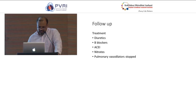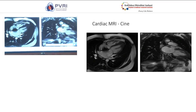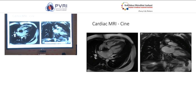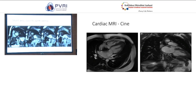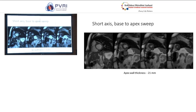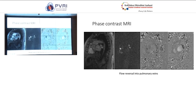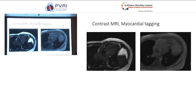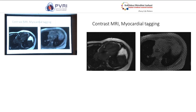We went for cardiac MRI. The cine MRI showed increased myocardial wall thickness at the apex compared to the base, with hypercontractility of the apex showing a spade-like deformity — typical of apical HCM. From base to apex, as we go towards the apex, it is obliterated with increased myocardial muscle thickness coming to around 21 mm by MRI measurement. Phase contrast MRI showed reversal of flow from the left atrium to the pulmonary veins due to severe LV diastolic dysfunction. Gadolinium enhancement showed no late gadolinium enhancement in the myocardial wall.